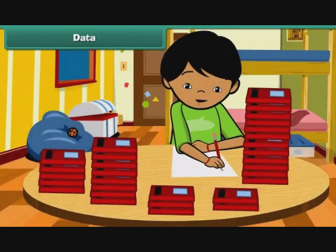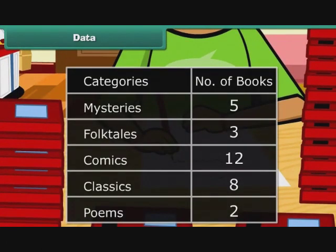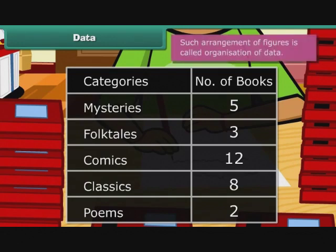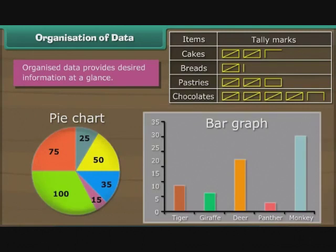When Ravi reaches home, he divides the 30 books into five different categories of comics, mysteries, folk tales, classics and poems. Here is how he summarized the details in the form of a table. Such arrangement of figures is called organization of data. Organized data provides desired information at a glance. We can organize data using tally marks, pie charts and bar graphs.